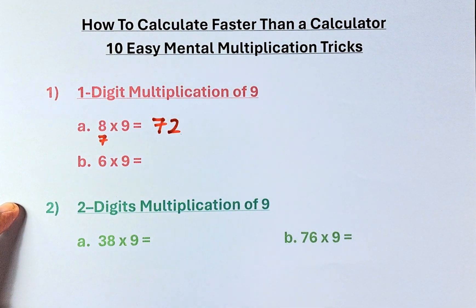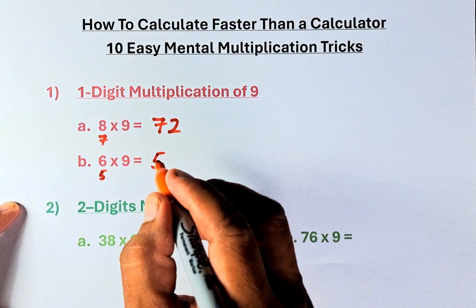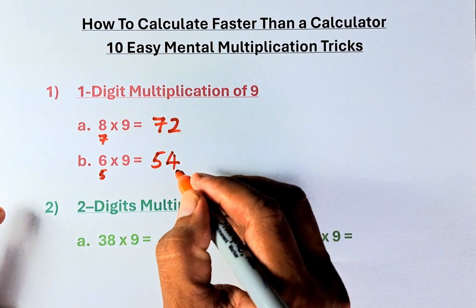Similarly, 6 times 9, reduced by 1 becomes 5. So 5 is the first number, and the second number, the 2 numbers must add up to 9, so it must be 54.